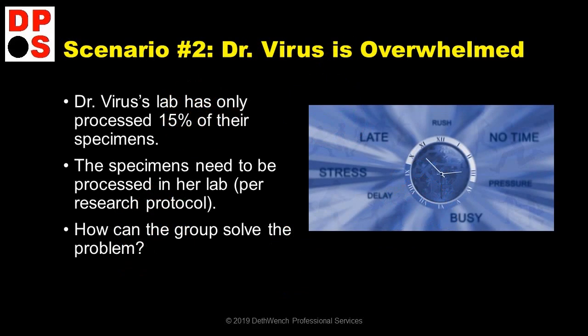In the second scenario, Dr. Virus' lab has only processed 15% of their specimen, so they are dragging the study behind. The research protocol says the specimen have to be processed in Dr. Virus' lab, so how can the group help to solve the problem?